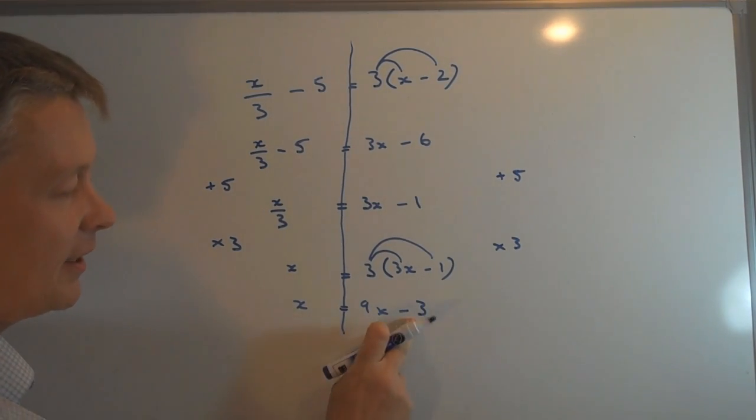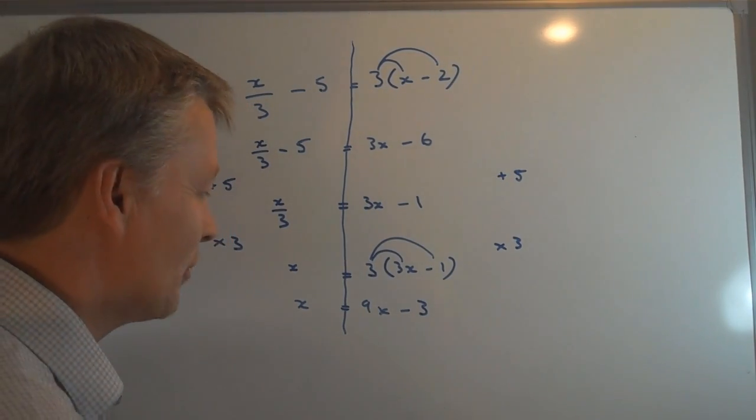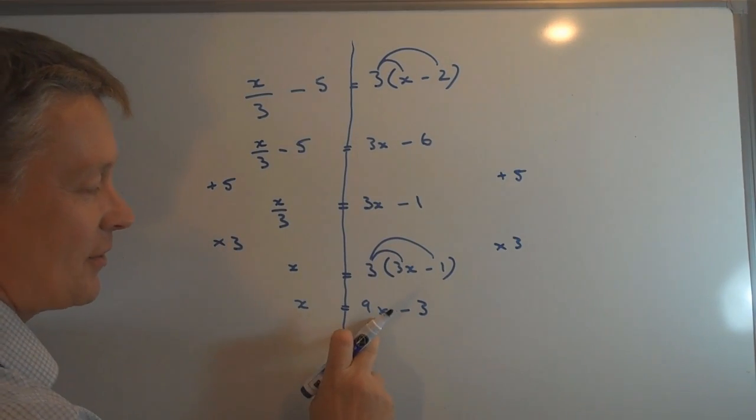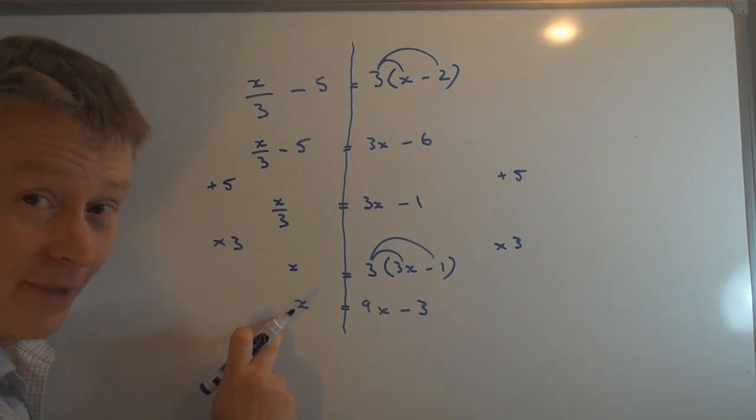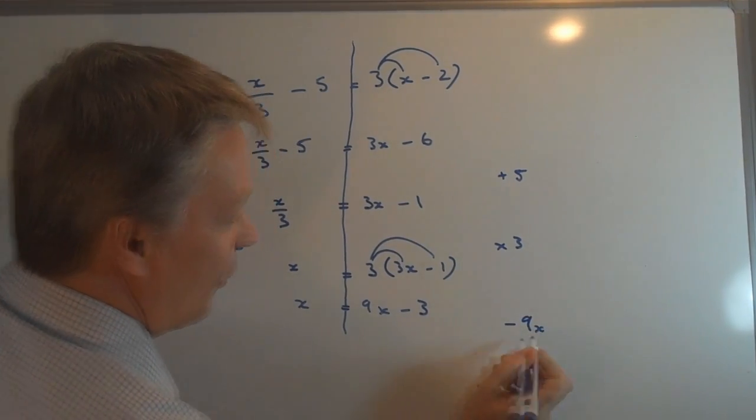Now if I take 9x from this side, I end up with minus 3. Don't generally like dealing with negative numbers, but I think on this one I'm going to have to. So if I take 9x from that side, I have to take 9x from this side. Let's see how that works for us.